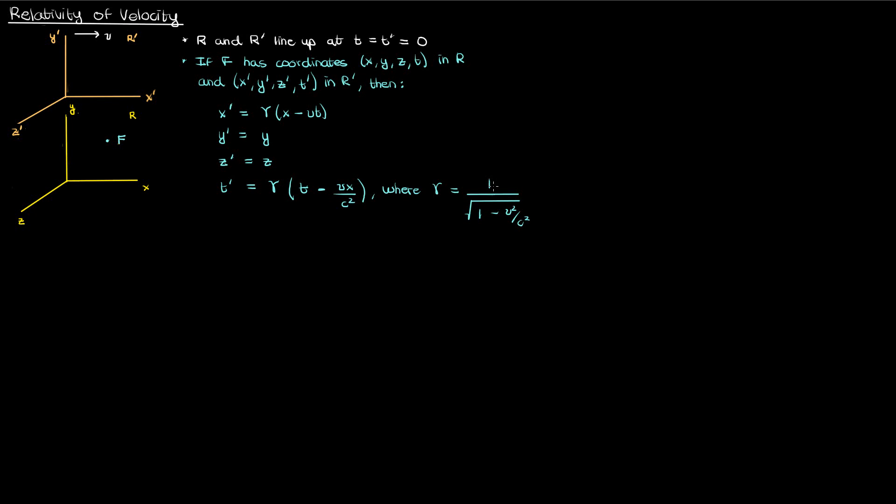Note that gamma is 1 over the square root of 1 minus v squared over c squared, where c is our speed of light.